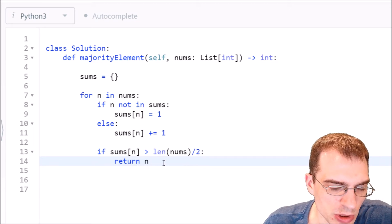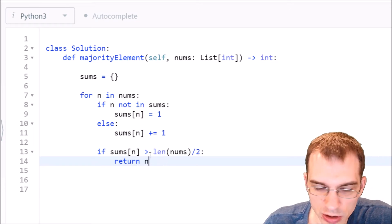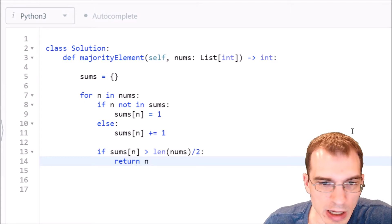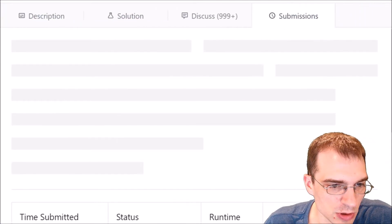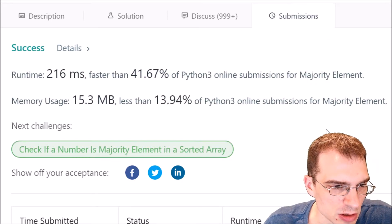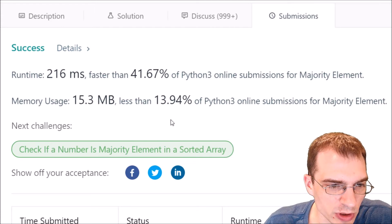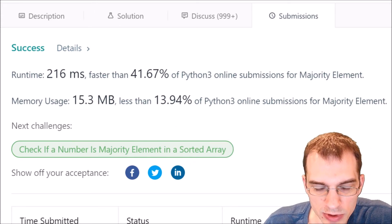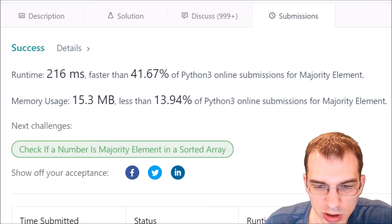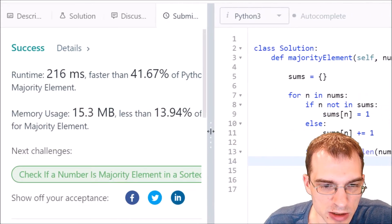So this should be a working solution here. So let us submit that and pull over to see what we get as our result. It's processing. So we got a runtime of 261 milliseconds, faster than 41.6 percent of Python 3 submissions. So it passed, it wasn't particularly fast it seems, but it was good enough to get past the solution.